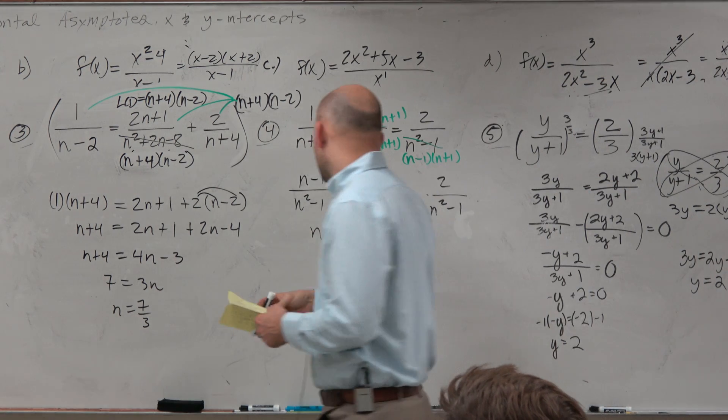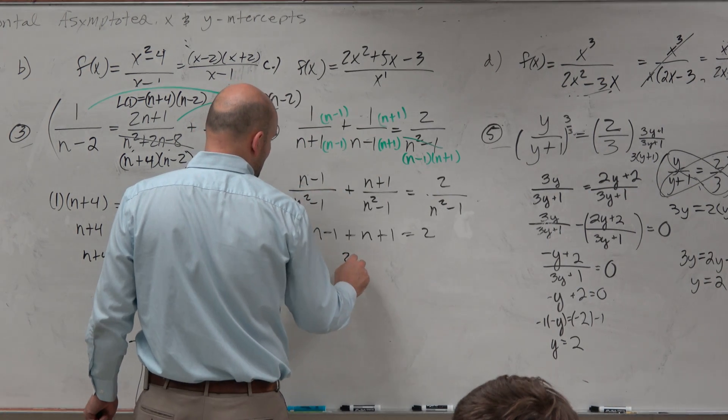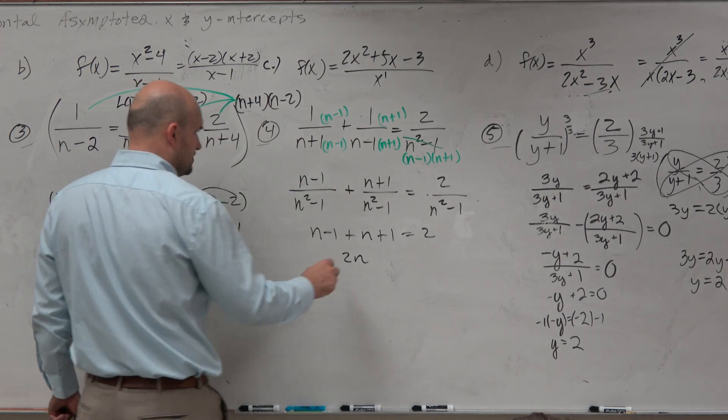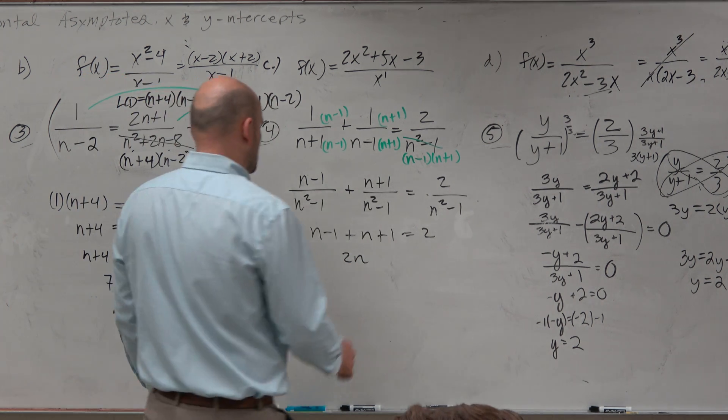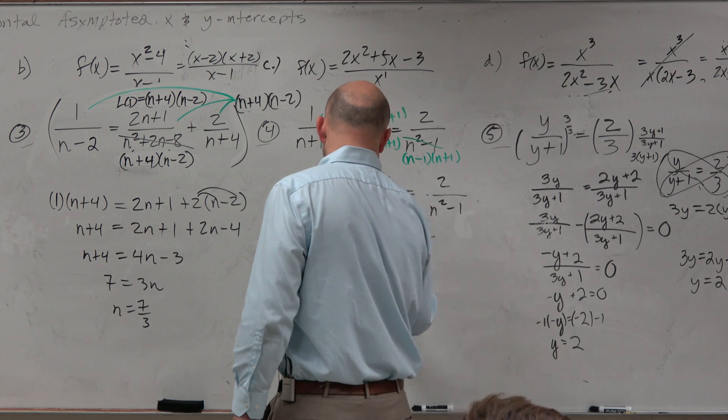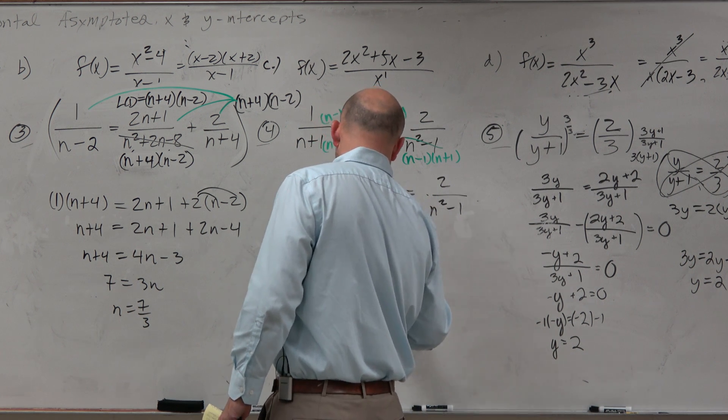Either way works. But in this case, I get 2n equals 2 divided by 2. n is equal to 1.